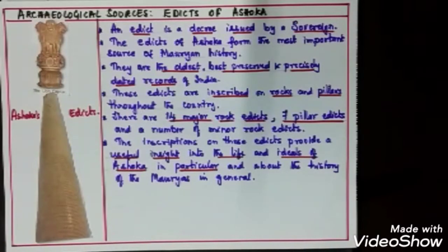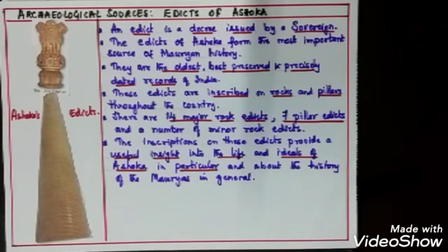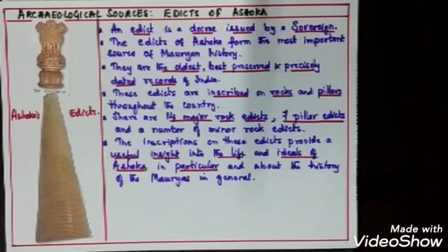Now we learn the archaeological sources. The main one is the Edicts of Ashoka — you can see a picture of the Ashoka pillar with inscriptions and the Lion Capital. An edict is a decree — an order or command issued by a sovereign. The edicts of Ashoka form the most important archaeological source of Mauryan history, and are the oldest, best-preserved, and most precisely dated records of India.